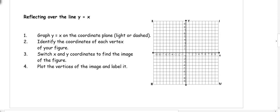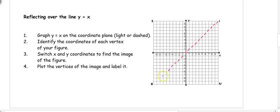The other type of reflecting we can do is over the y equals x line, which is a diagonal line. Y equals x starts at the point (0, 0) and has a slope of 1 over 1, so we go up 1 over 1 all the way to the corner and back down to the other corner. Let's try some points: A is (2, 8), B is (5, -4), and C is (-8, -8).